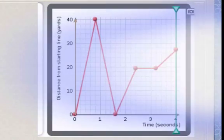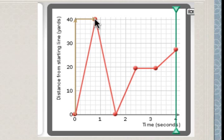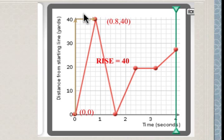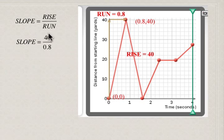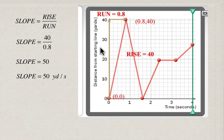We're going to take a look at the rise and the run between these two points. Our first point is (0, 0) and our second point is (0.8, 40). Using our slope formula, if we're going from zero up to 40 then the rise is 40, and if we're going from zero to 0.8 then the run is 0.8. So slope equals rise over run: 40 over 0.8 comes out to be 50. Since distance is in yards and time is in seconds, the units are yards per second — he's running 50 yards per second.